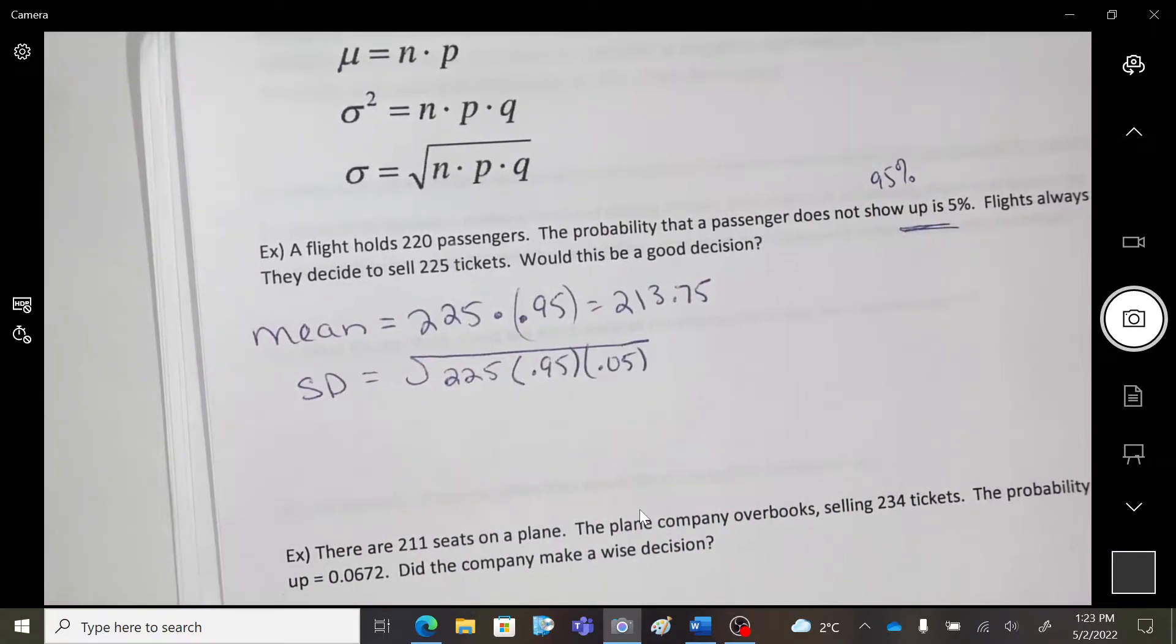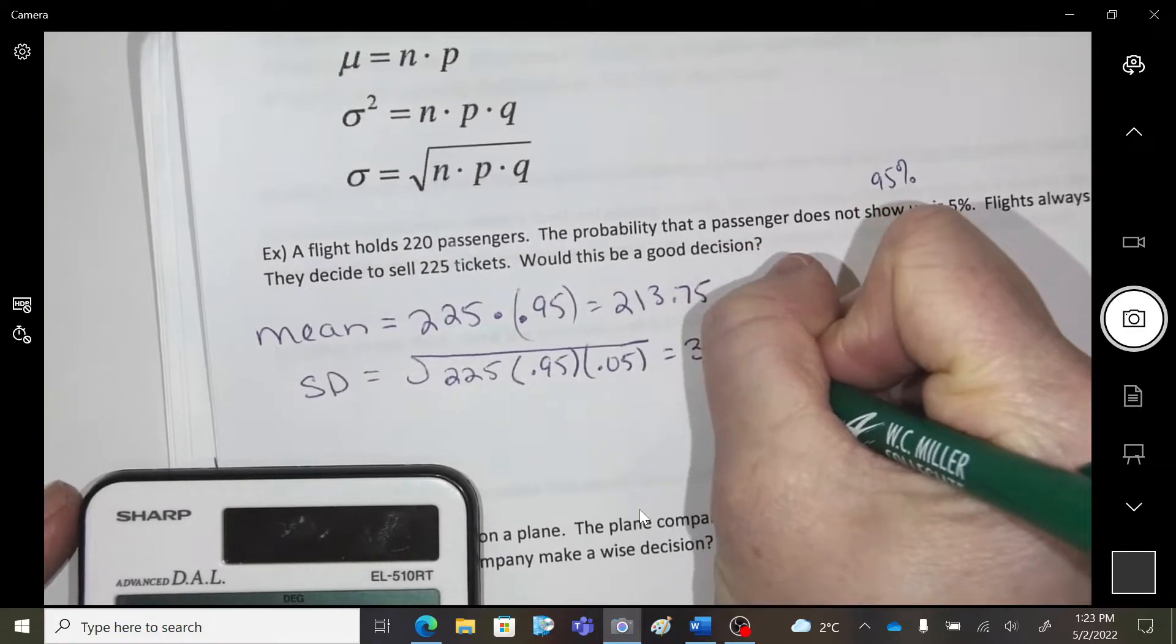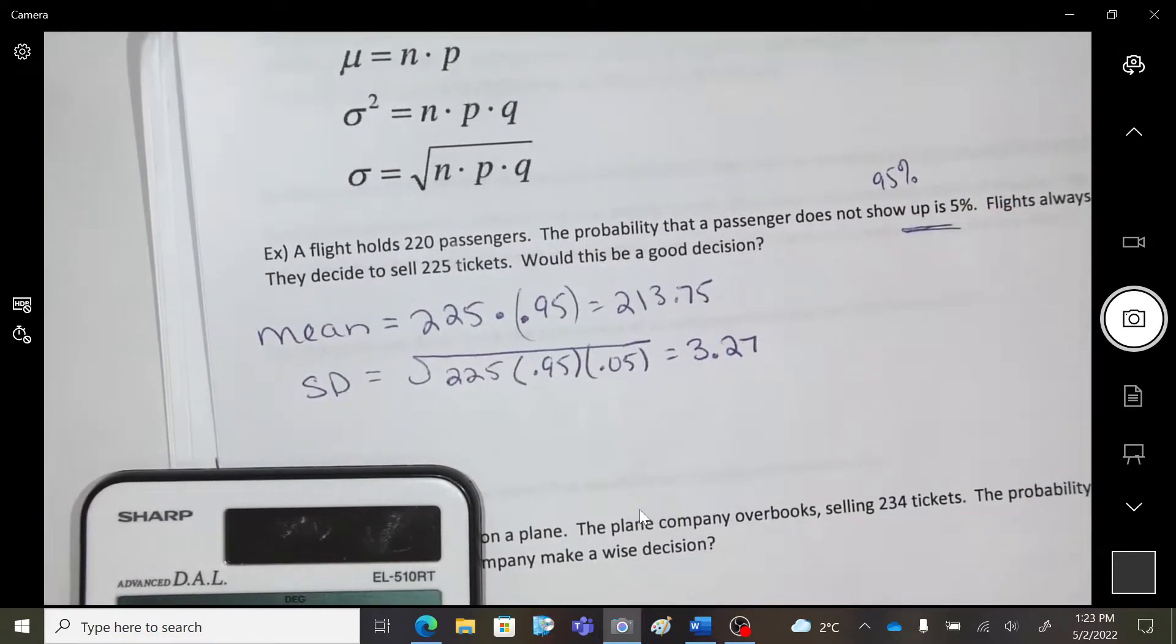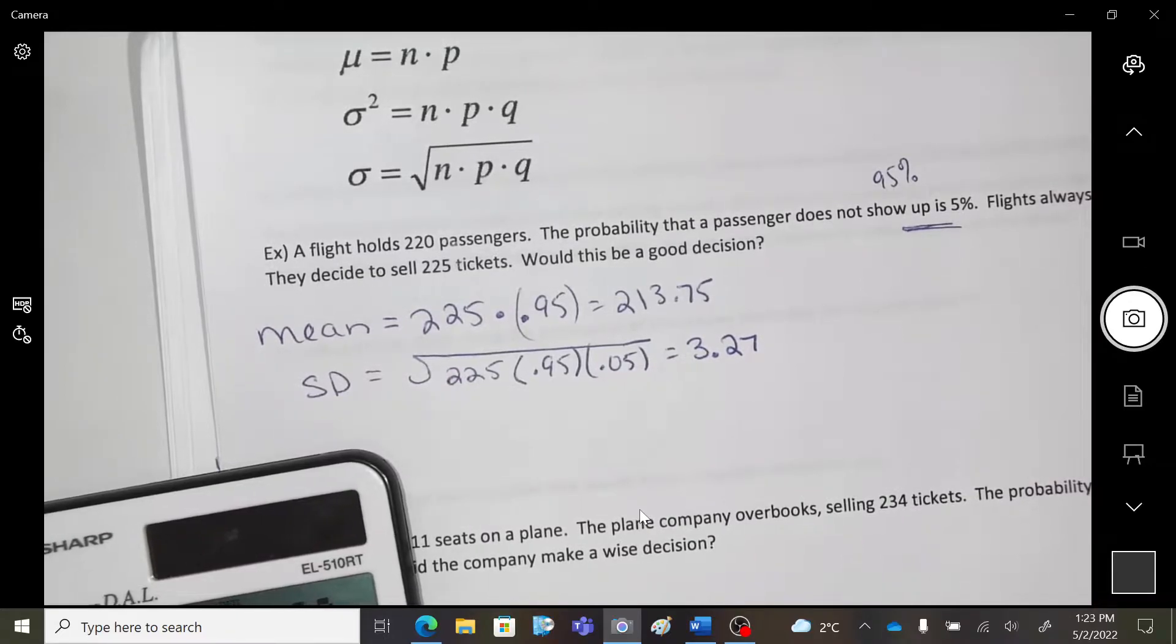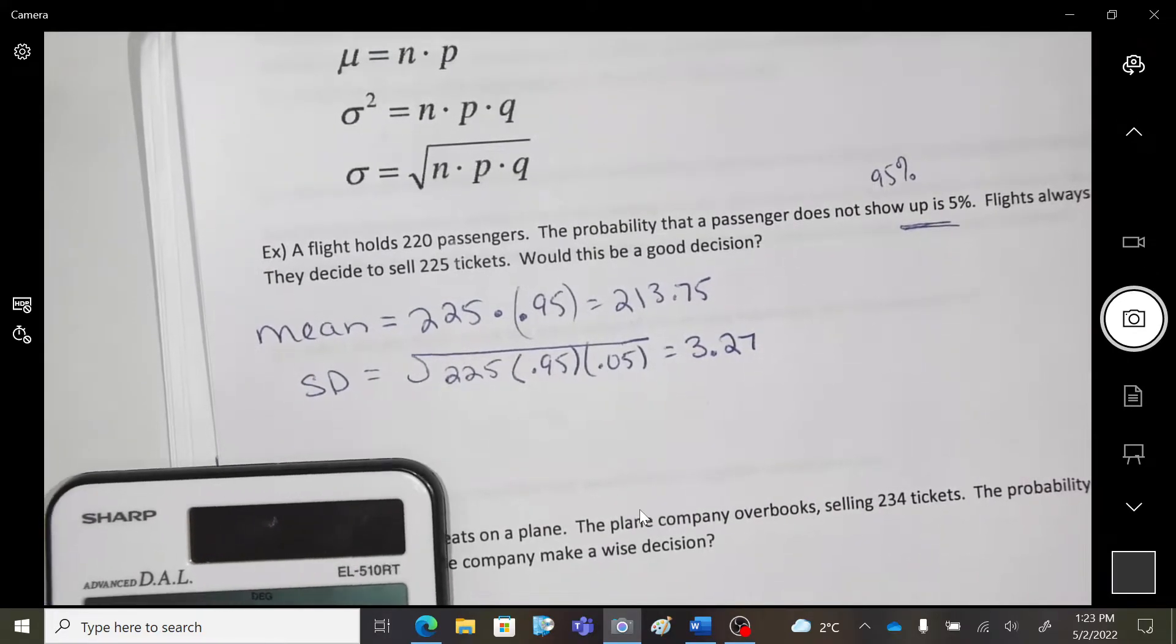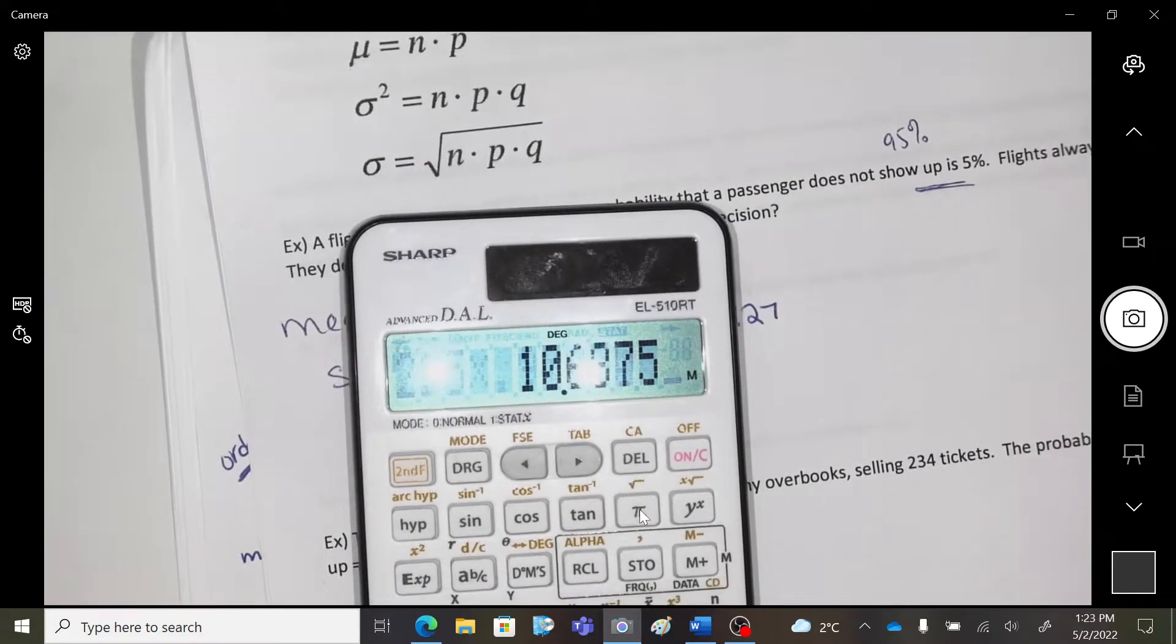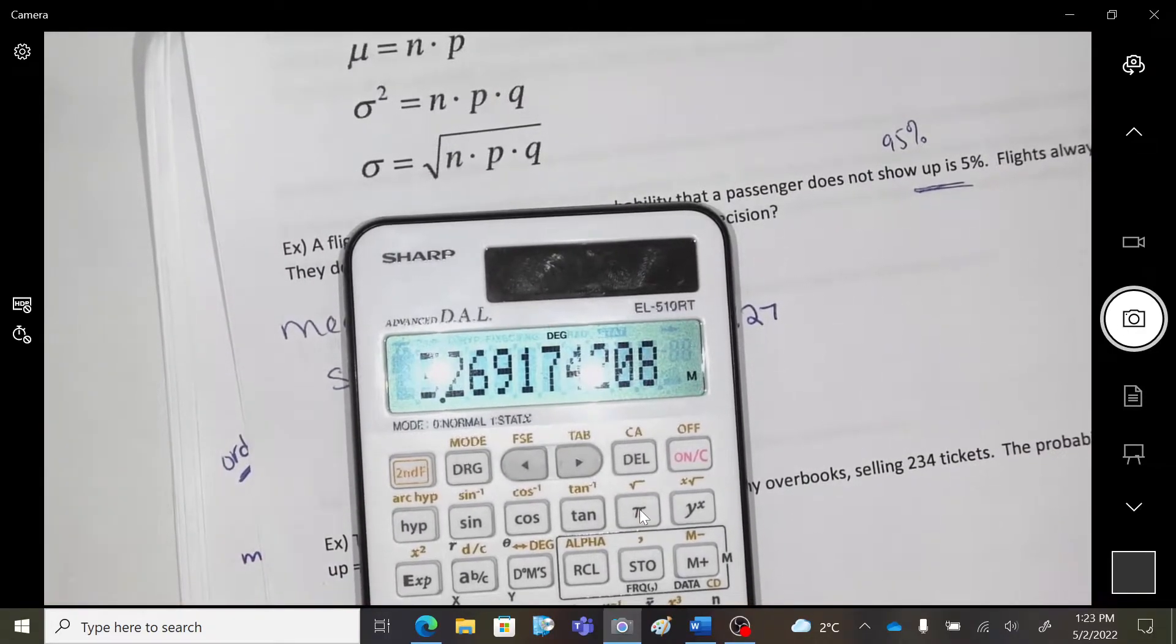Square root that. And I got 14.6, seems, I'm going to do that again. Nope, nope. I knew I typed something wrong. That was too high. 3.27. 225 times 0.95 times 0.05, and then I square root answer. Yep.